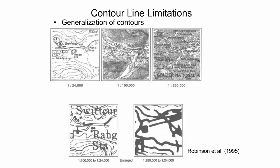One of the limitations of contour lines is contour generalization. Since all contour lines have thickness, it is impossible for a contour line to reflect each elevation variation. Map scale plays a large role in how contours are generalized. The three figures on top show a comparison of contours for the same area in Glacier National Park at different map scales. The two figures at the bottom show a magnified view of the upper 1:100,000 and 1:250,000 maps at the 1:24,000 scale, clearly demonstrating the loss of detail when producing small scale maps.